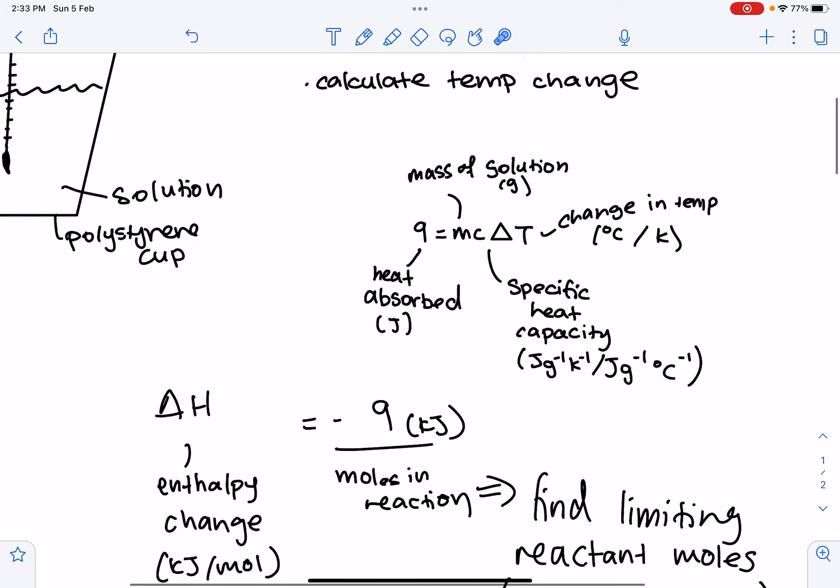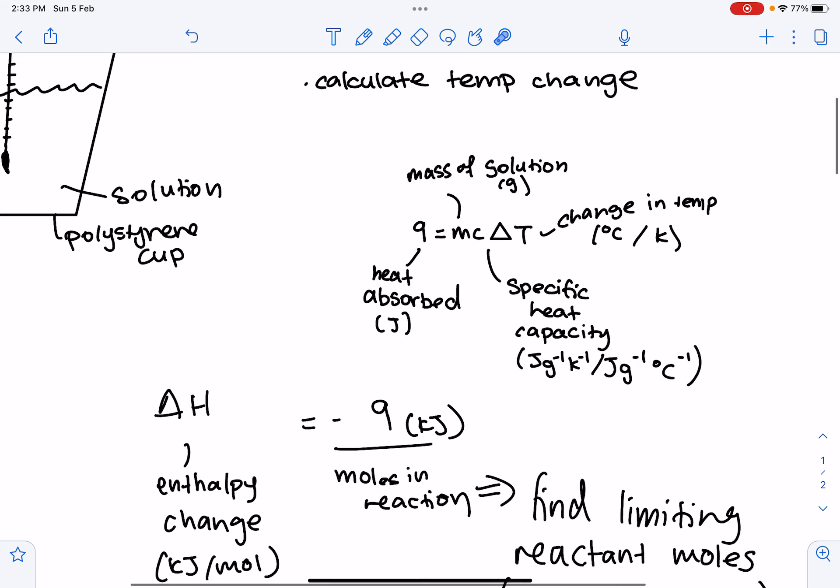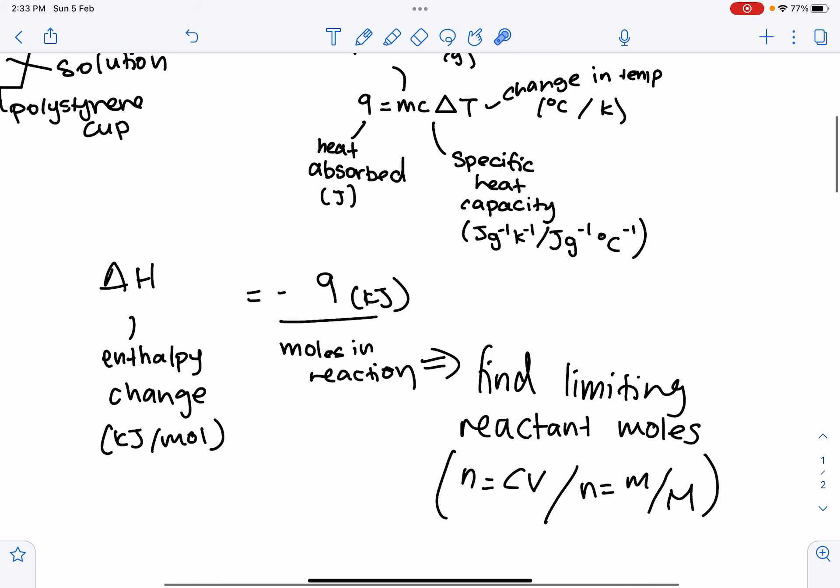So, now let's look after we find Q, then we can try and find the enthalpy change. So, then the other equation we'll be looking at is change in H is equal to negative Q divided by moles in reaction. And the moles in reaction is calculated by finding the limiting reactant moles. So, whichever reactant has the least amount of moles, that will be the number of moles you use in this equation to find delta H.